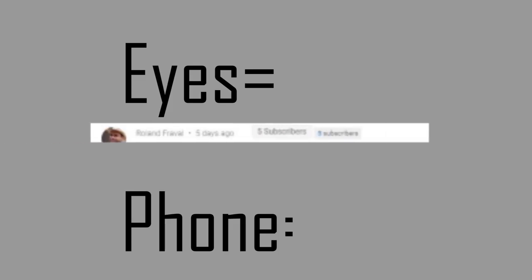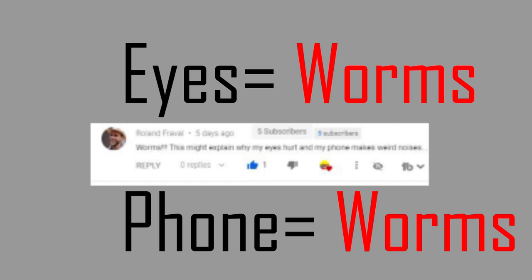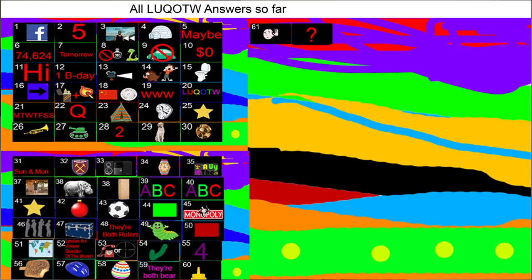Roland Frivel said worms and the correct answer of course is contacts and the first person to say that answer and the winner of the competition is Christopher Lort. Congratulations to you Christopher.